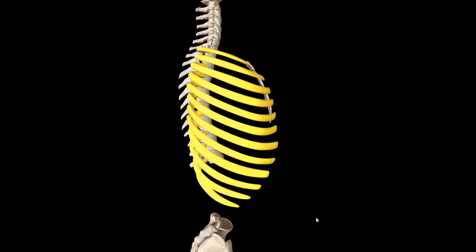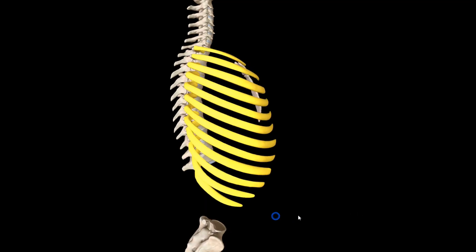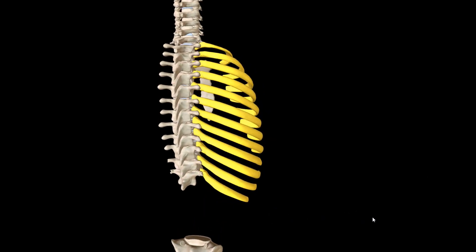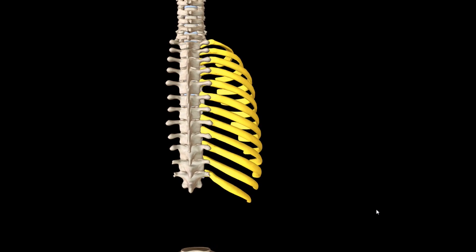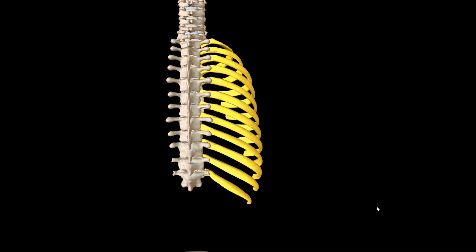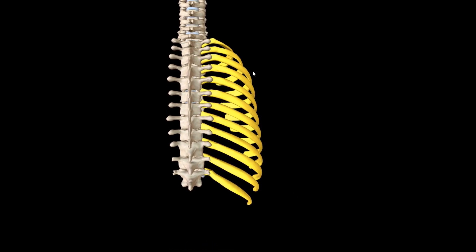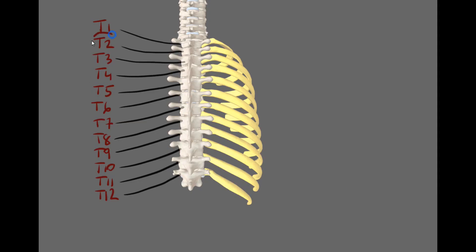Let's go back three-dimensional. Here we can see the vertebral column with the lumbar spine missing, right side ribs showing and left side ribs missing. T2 through T8 are the typical thoracic vertebrae.